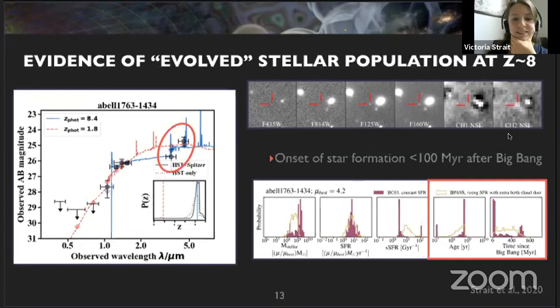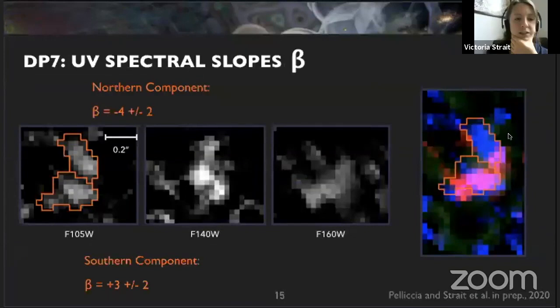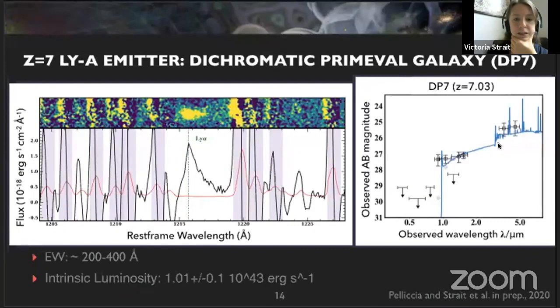A final question from Rohan Naidoo: what's your interpretation of the positive beta slope? What kind of ages or dust do you need? I don't know the actual dust numbers off the top of my head — we're currently working on this. But it looks reminiscent of the SED fit here, which looks fairly dusty, and I think the reddening E(B-V) was around one, if I remember correctly.